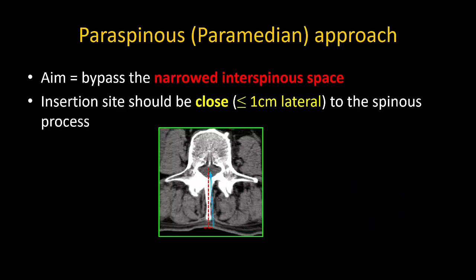Because the aim is to merely bypass the interspinous space, the needle should be inserted very close to the spinous process. This is why I prefer the more descriptive term paraspinous to paramedian. This vital step simplifies the three-dimensional triangulation process that causes most of the difficulty with this approach.